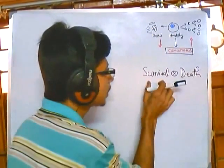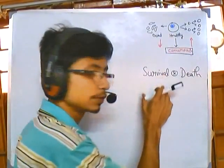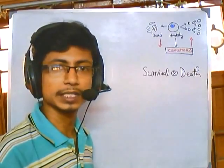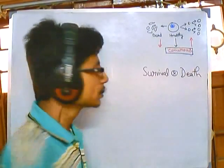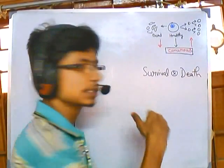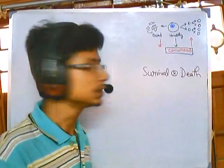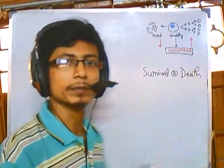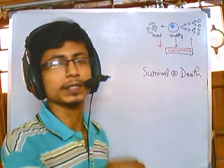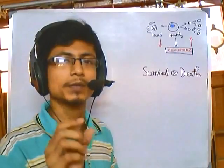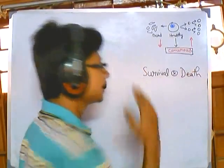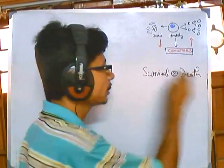A few proteins are involved in cell survivability and cell death, because proteins are doing all these things. For cell survival, proteins support normal growth and division. For cell death, proteins like caspases, perforins, and granzymes are involved in killing cells.